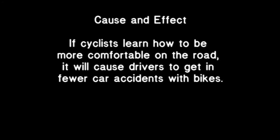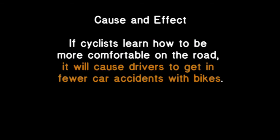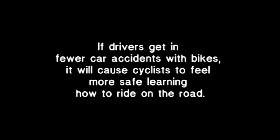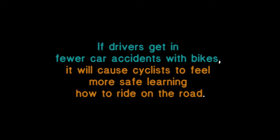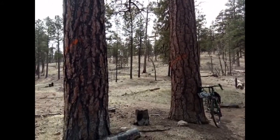Cause and effect: is there a transition that is almost impossible to turn around without losing its meaning? If cyclists learn how to be more comfortable on the road, it will cause drivers to get in fewer car accidents with bikes — but that doesn't make sense. Flipping it: if drivers get in fewer car accidents with bikes, it will cause cyclists to feel more safe learning how to ride on the road. This part is cause and this part is effect, and that makes much more sense. But now we've lost the emphasis at the end that readers expect.